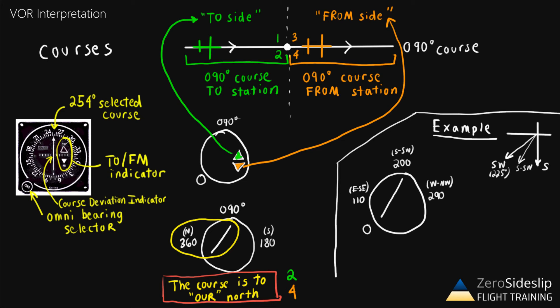Okay, so let's say that in this scenario, the needle is deflected to the left side of the instrument, and let's say that the to from indicator is showing a down-pointing arrow, which would be from, as we discussed before. So now it's time to figure out where the airplane is relative to the VOR. It's really simple. We just draw our VOR, and we draw the selected course, which in this case is 200, same direction as we drew before, south-southwest.